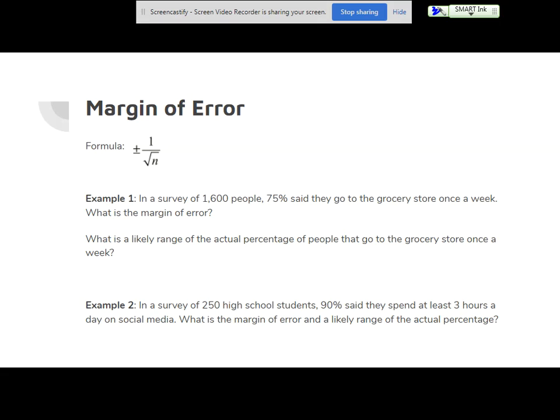The formula is plus or minus one over the square root of n. Have you all ever paid attention? Usually around political election time, they'll report such and such percent support this candidate, and down at the bottom you'll always see like plus or minus 3%. That's what that plus or minus 3% is. It's the margin of error.